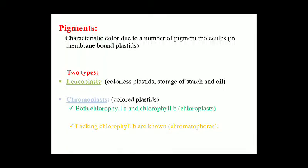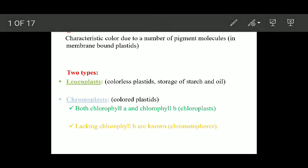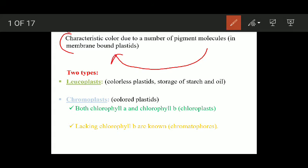Welcome back students. Today we are going to talk about the pigments found in algae and the related structures. Some algae possess a characteristic color due to a number of pigment molecules, and these pigment molecules are found in membrane-bound cellular structures which are known as plastids.